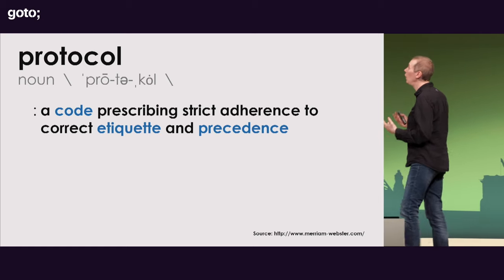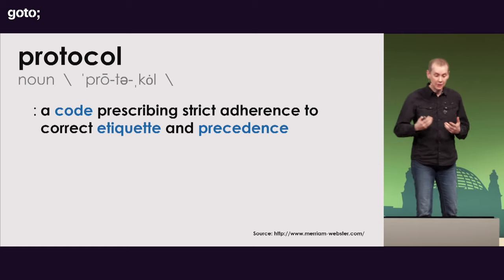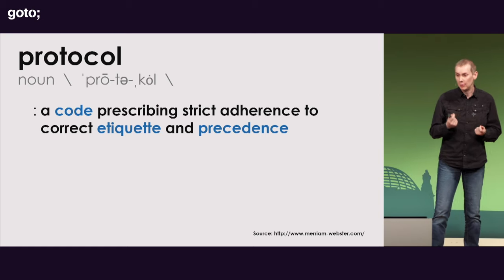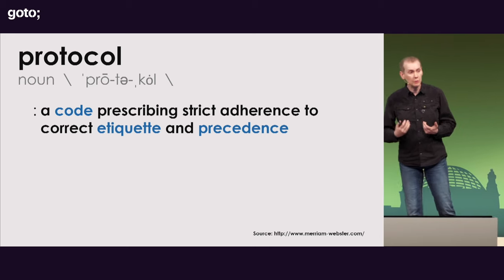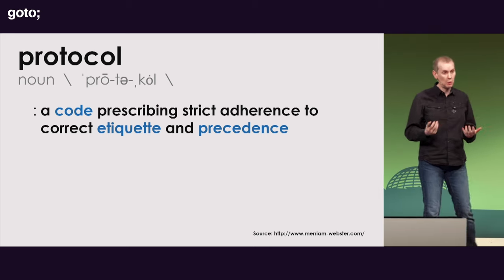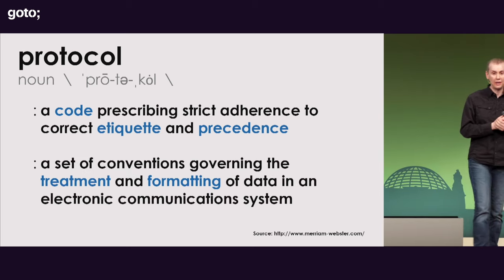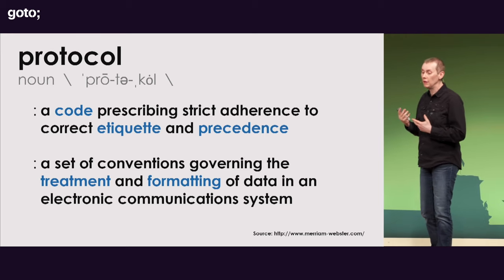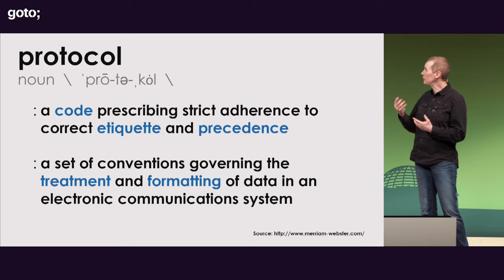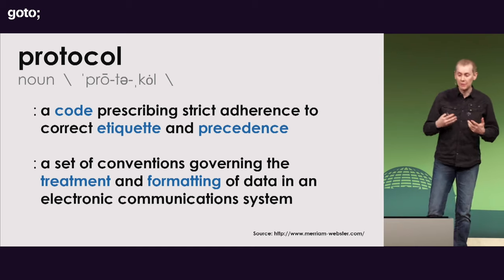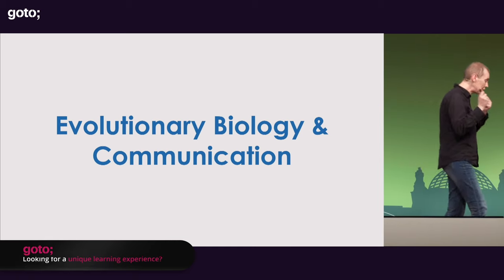So protocol — what is it? It's a code prescribing a strict adherence and correct etiquette and precedence. Precedence is the most important part here that people often forget. The order in which things happen is very important — you just don't want things to happen in any order. In computer science, we talk about the conventions that govern the treatment and formatting of our electronic communication systems. We often just think of formatting and don't think of treatment. The treatment is about etiquette and precedence, and that's what I want to explore.